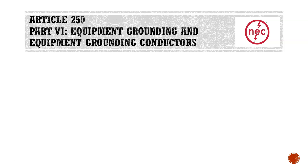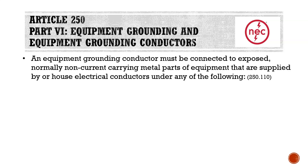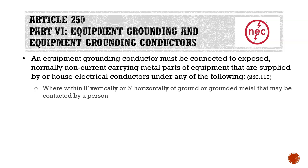Starting off here at Article 250, we're going to be taking a look at Part 6, which is equipment grounding and equipment grounding conductors. An equipment grounding conductor must be connected to exposed normally non-current carrying metal parts of equipment that are supplied by or house electrical conductors under any of the following conditions. If any of these conditions exist, we have to have an equipment grounding conductor to connect to that equipment.